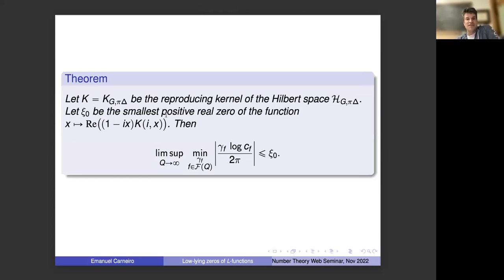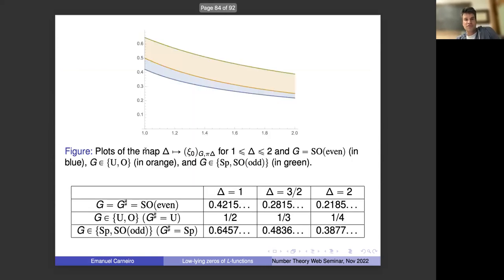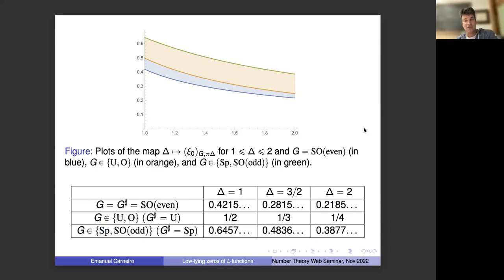With g = |f|^2, this becomes the L^2 norm of x times f divided by the norm of f in the Hilbert space. You want to minimize this ratio over f in the Hilbert space. Multiplying by z doesn't change the exponential type, so this is a function in the same space. This has a nice solution in terms of the reproducing kernels: the answer is the smallest positive real zero of the function real-part of (1 - ix) K(ix), where K is the reproducing kernel. For example, when support is two, Hughes and Rudnick proved a low-lying zero at height at most one-quarter of the average. With SO-even symmetry you get 0.21, and with symplectic symmetry you get 0.38 times the average spacing.